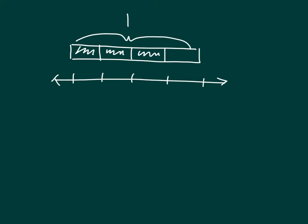Here we have a tape diagram and also a number line. We are separating our number line and tape diagram within those same spots. If we concentrate on the tape diagram, it looks like this is between 0 and 1, and we have divided this into 4 parts, and we have shaded 3 of these parts. So we're looking at the fraction 3 fourths.